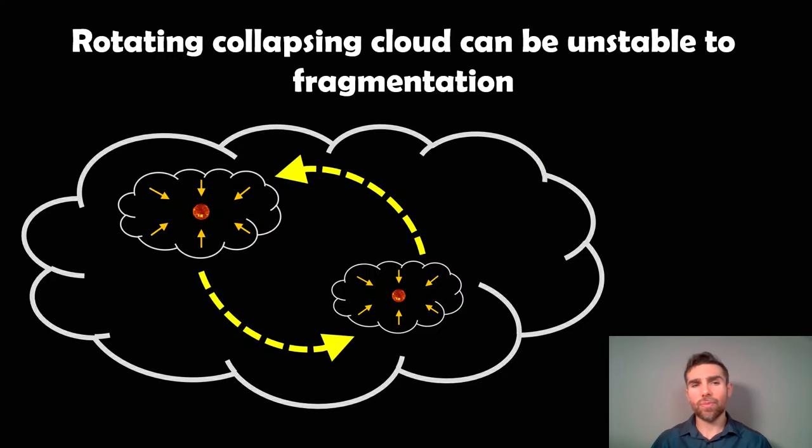The other one is as that rotating gas cloud is collapsing, it can also fragment. Before it gets to the disk stage, you can get fragmentation in the actual larger gas cloud. You get two localized collapses, and because the gas cloud is rotating, you end up with a binary system.